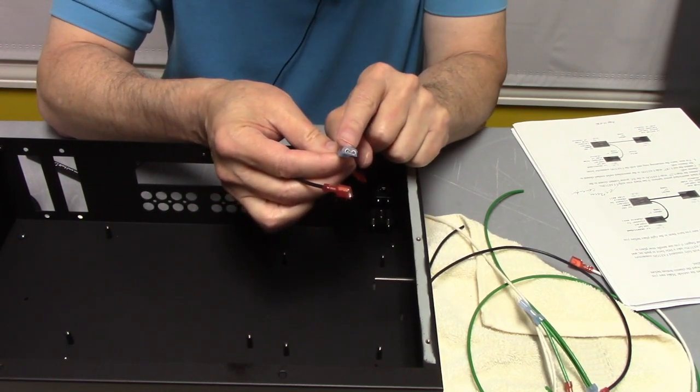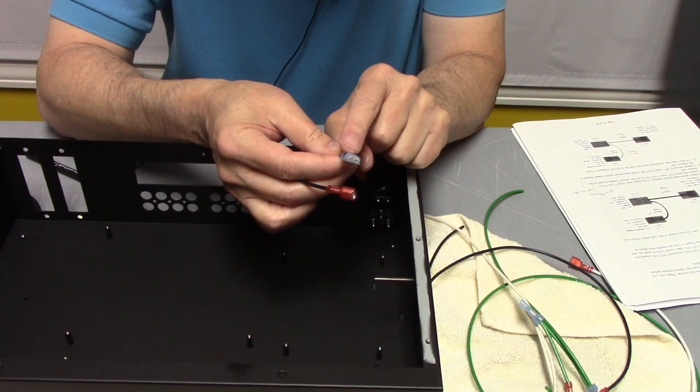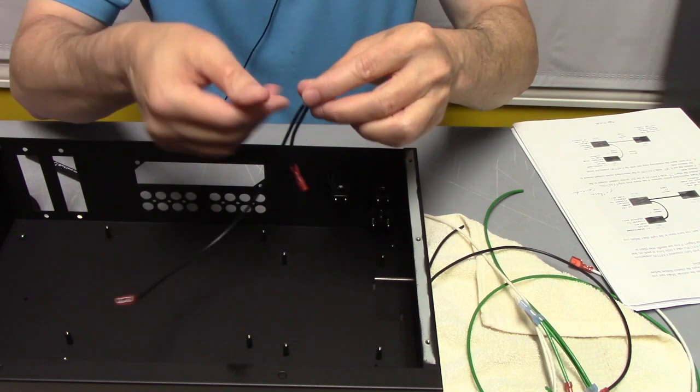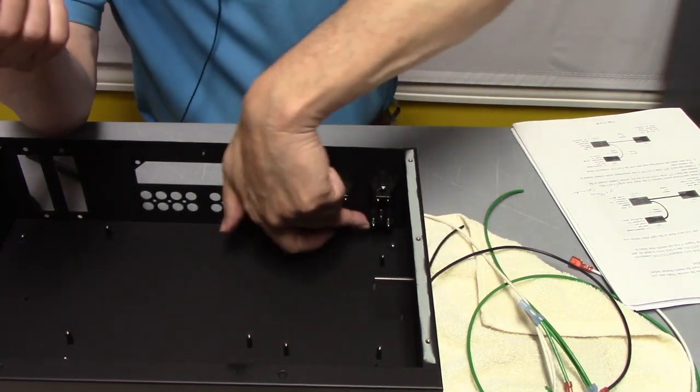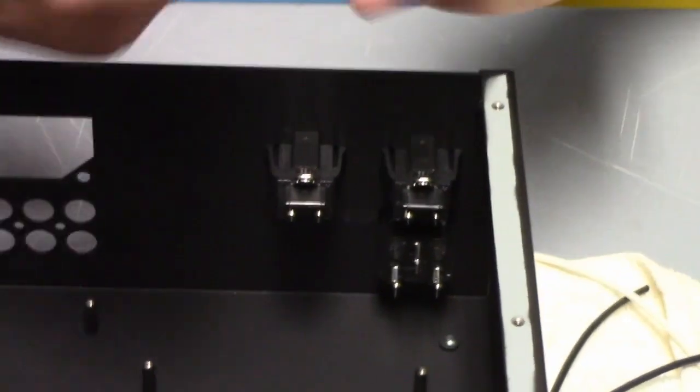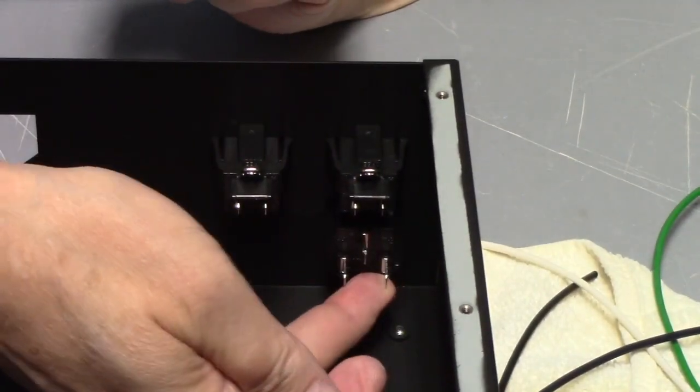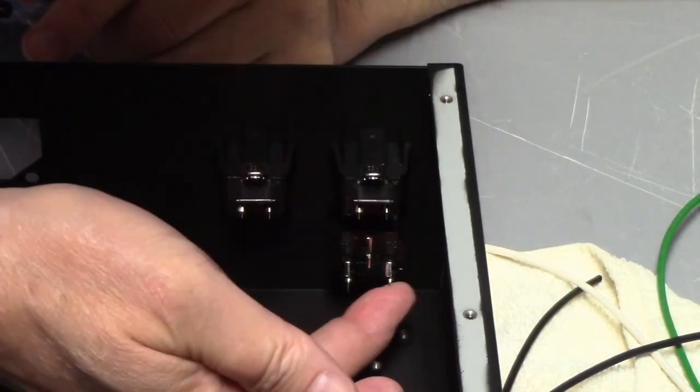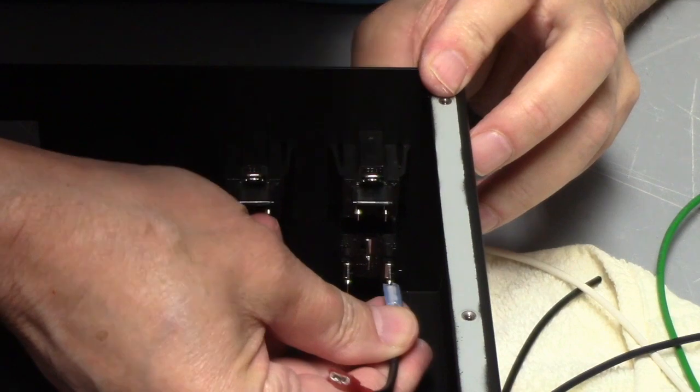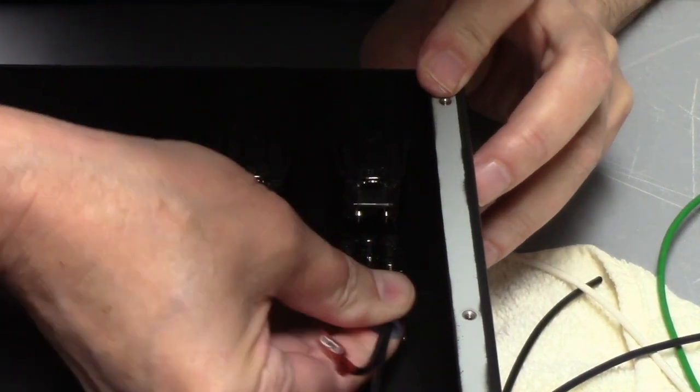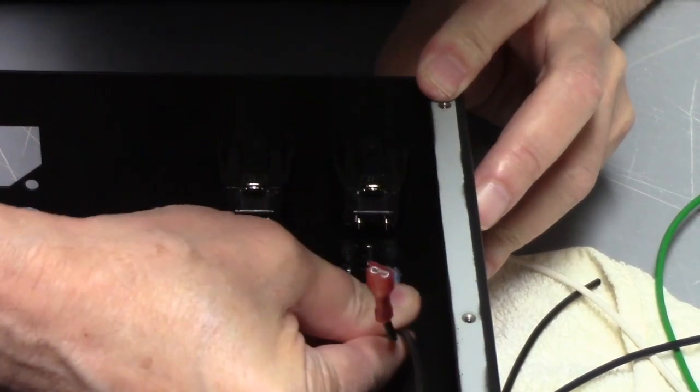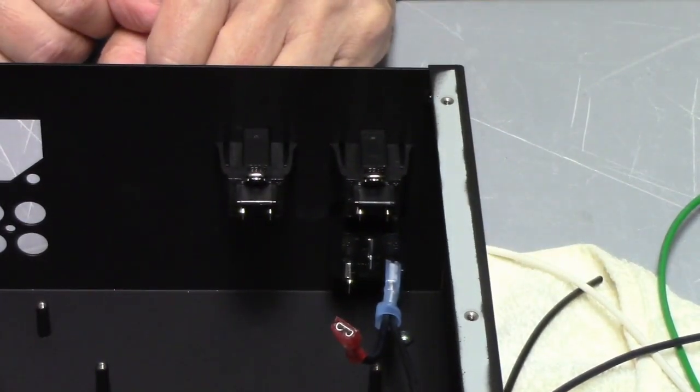Then it says connect the blue quarter inch wide fast on. That's this one. To the IEC power entrance connector contact closest to the chassis wall. Power entrance connector is this guy down here at the bottom. And the contact closest to the chassis wall is this one. Just doing that by feel, but yeah, I've got it. There you go. And what we're going to do is we'll push that guy on. A little wiggling helps usually. One connection down.